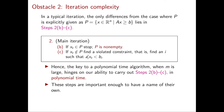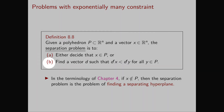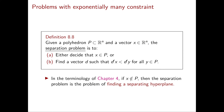These steps are so important that they have their own name: the separation problem. Given a polyhedron P in R^n and a vector X in R^n, the separation problem is to either decide that X is in P, or find a vector D such that D transposed X is strictly smaller than D transposed Y for all Y in P. In other words, we wish to find a separating hyperplane — a hyperplane such that P lies on one side and the vector X lies on the other side.